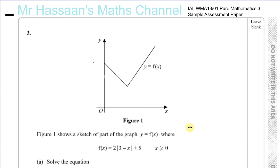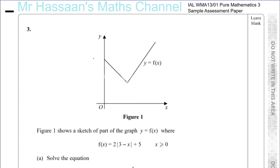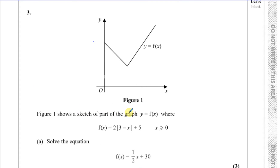Welcome back. This is question number three from the P3 sample assessment paper for the international A level. This question is about the absolute value function. Figure one shows a sketch of part of the graph y = f(x) — it's a V shape, typical of the absolute value function. f(x) equals two times the absolute value of (3 minus x) plus 5, where x is greater than or equal to zero, so it's only drawn for non-negative values of x.